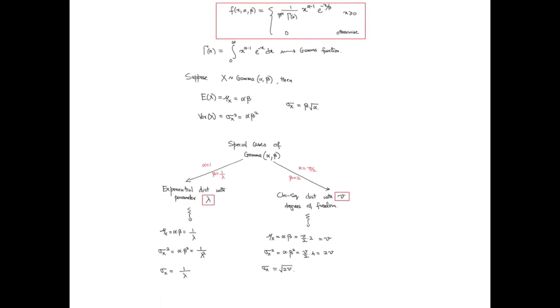The normal distribution is by far the most important distribution in statistics, and the chi-square distribution will also show up when doing inference with regards to variance. We will be using these distributions a lot in what follows in this course. Good luck and see you around.